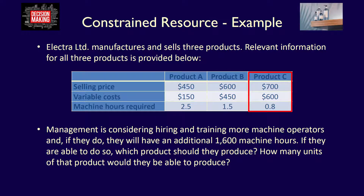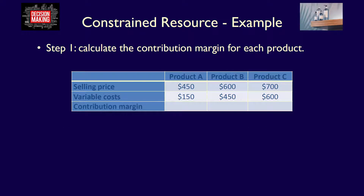Product C has a selling price of $700, variable costs of $600, and requires 0.8 machine hours to produce. Management is considering hiring and training more machine operators, and if they do, they will have an additional 1,600 machine hours. If they are able to do so, which product should they produce? How many units of that product will they be able to produce?